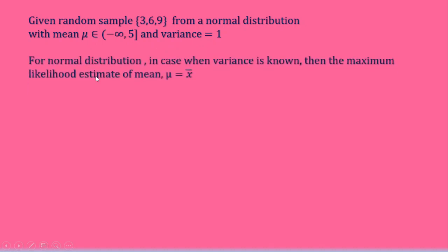So what we know? We know for a normal distribution in case when variance is known. Here variance is given, so it is known. Variance is 1. Then the maximum likelihood estimate of mean μ is equal to x̄.